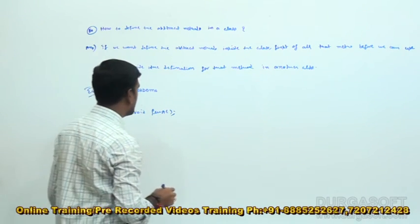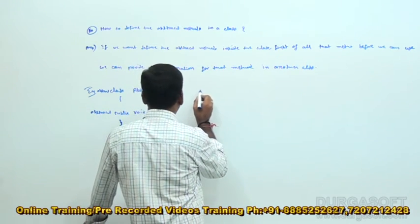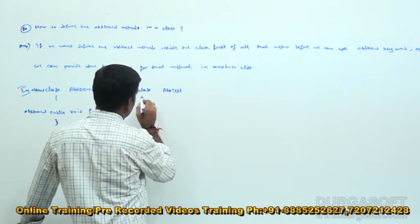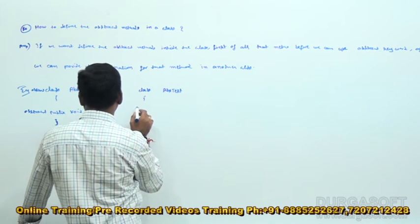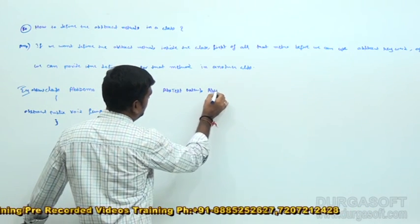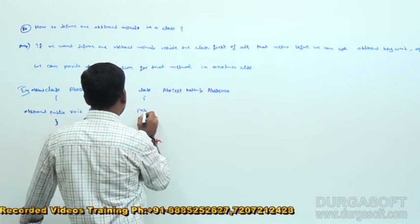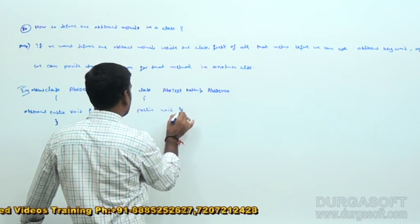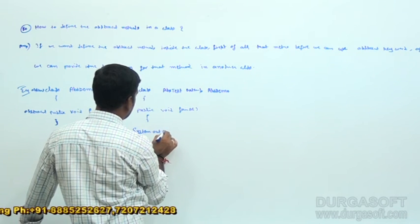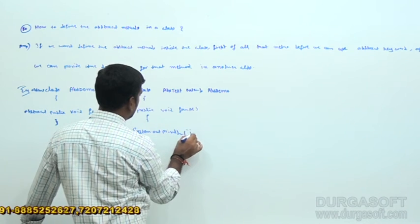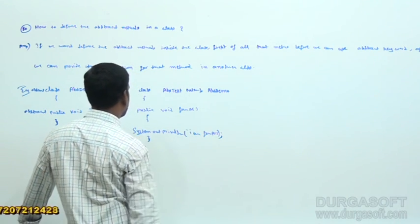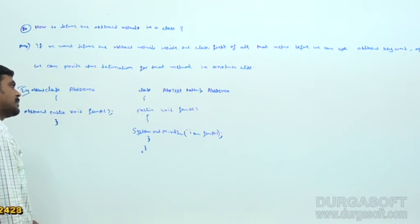Abstract. How to provide the implementation? We can provide it like this — abstract class AbsTest. Under that, we can take extends AbsDemo. After that, public void functionA — now System.out.println, 'I am function A'. Like this we can provide the definition for the abstract methods. This is the answer.